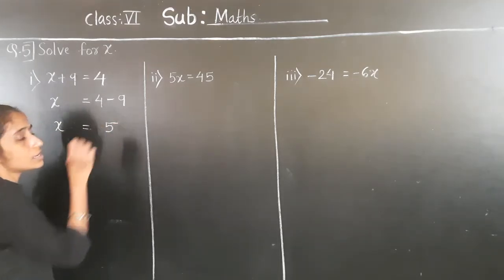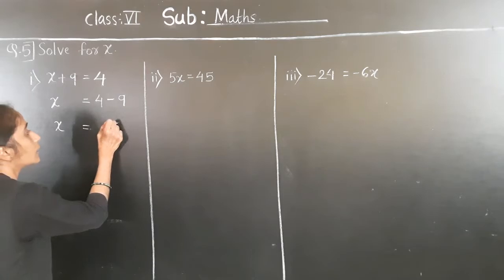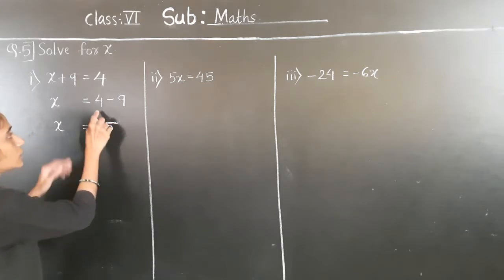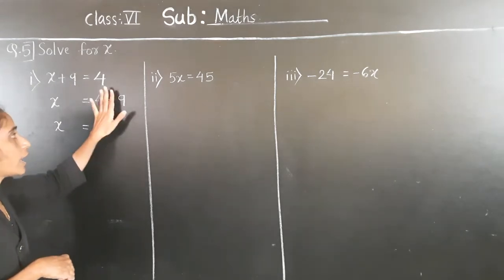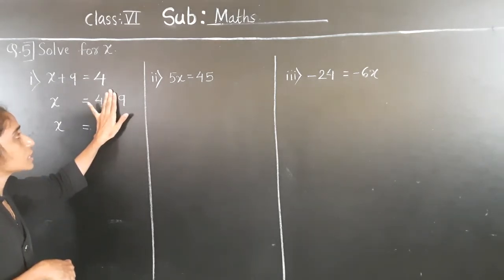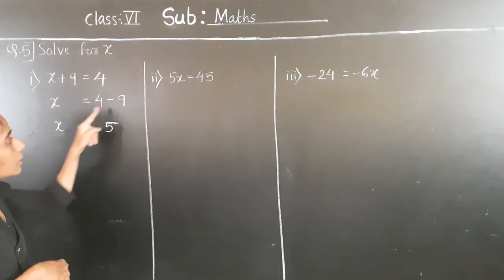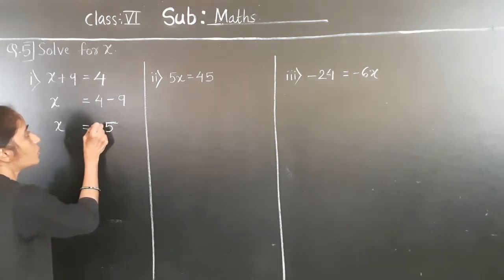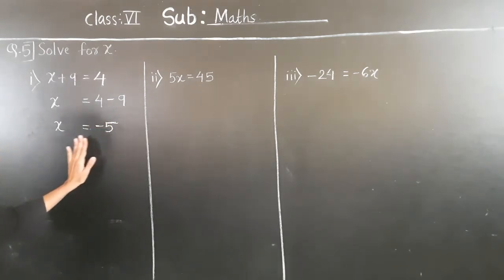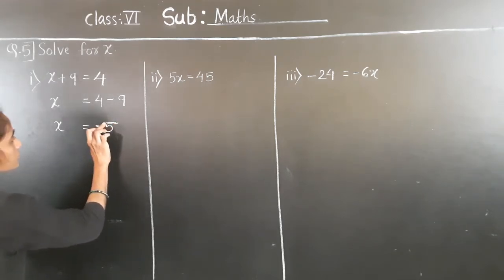The answer is 5. Now, which is the greater number — 4 or 9? You can hide the sign and check: 9 is the greater number, and 9 has a negative sign, so the answer also has a negative sign. Therefore x is equal to minus 5.